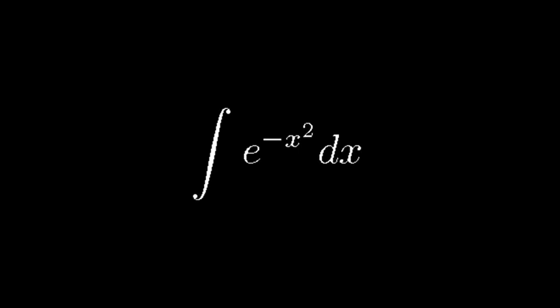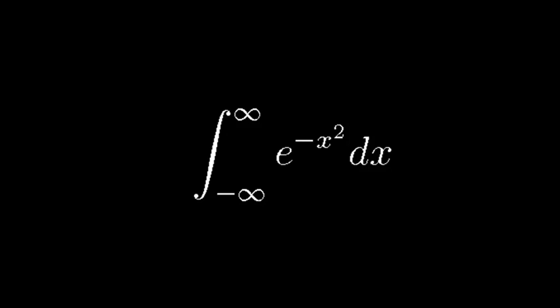If we integrate this from negative infinity to positive infinity, we'll find that the area between this line and the x-axis is the square root of pi. Crazy, right?